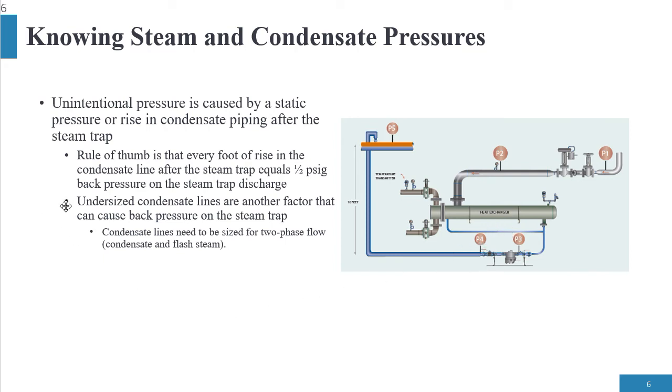The other factor is that undersized condensate lines, which I already mentioned, is a big factor today in steam and condensate systems. Therefore, 95% of the time we're going to have back pressure onto the system.